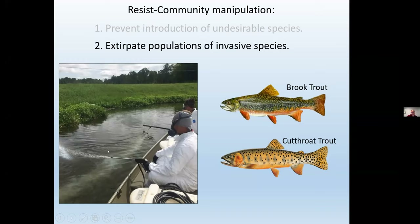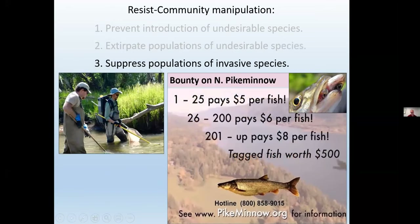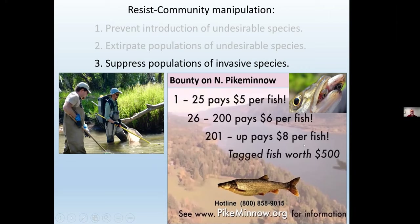Or we might simply suppress populations — recognize that we can't get rid of them, but reduce their populations and therefore their negative effects. That can be done through mechanical removal, netting or electrofishing. Here's a particularly innovative way of outsourcing that control: in the Columbia River basin, there's a bounty on northern pikeminnow, which is a predator on native trout species. People can earn money by catching these pikeminnow and turning them in to a nearby game and fish office, with some tagged fish worth up to $500 each — a pretty innovative way of using the public to help with suppression of invasive fish species.